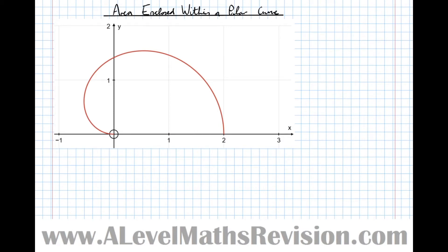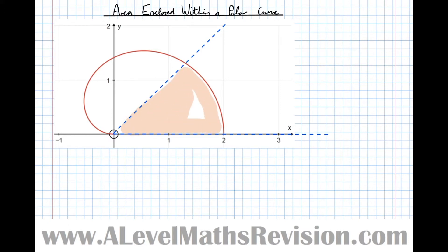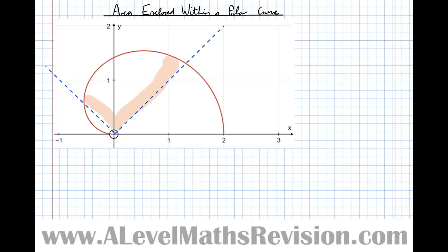With polar coordinates we integrate with respect to theta, so what we'll find is the area enclosed between the curve and two angles. For example, if we were to integrate between theta equals zero and theta equals pi over four, we find the area enclosed between those two lines and the curve. Similarly, integrating between pi over four and three-quarters pi finds the area enclosed between the curve and those two lines.